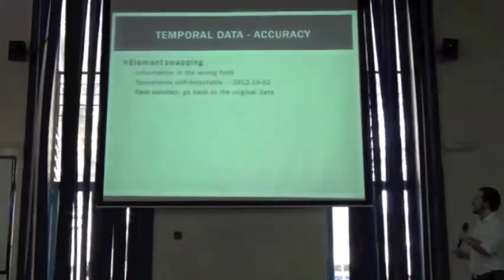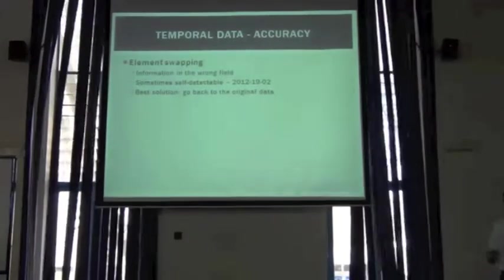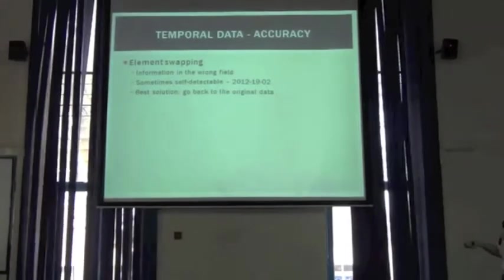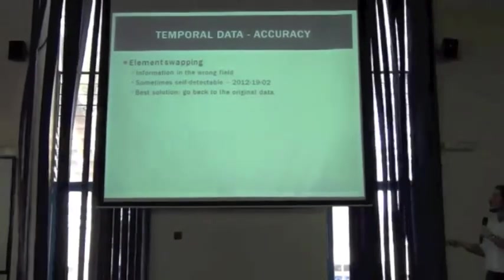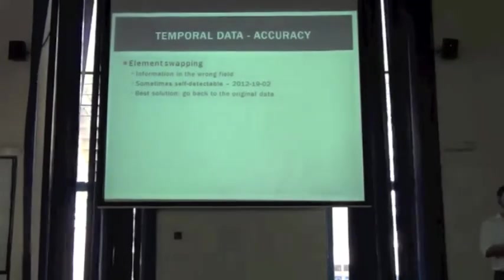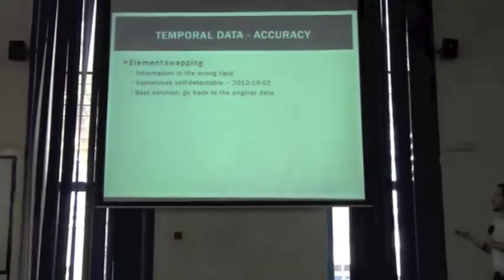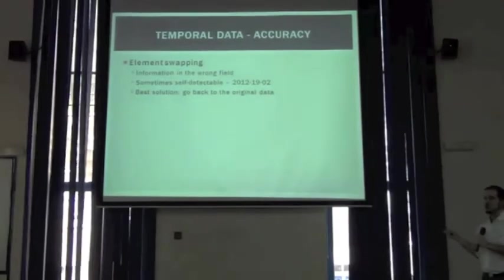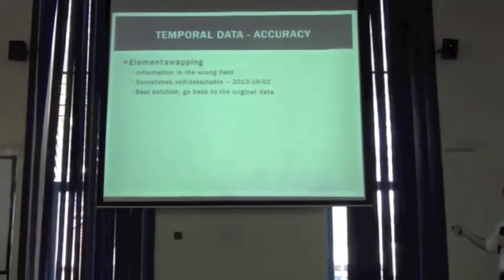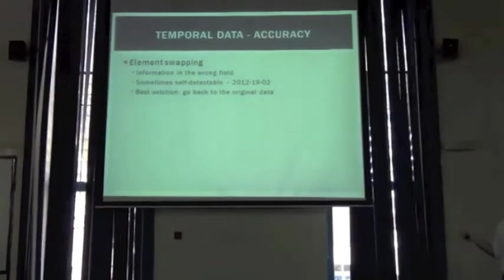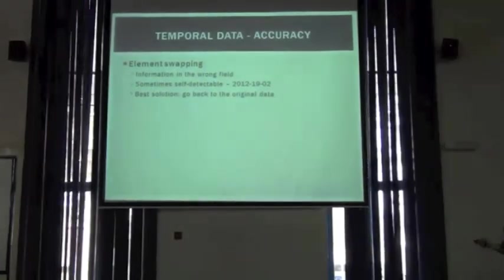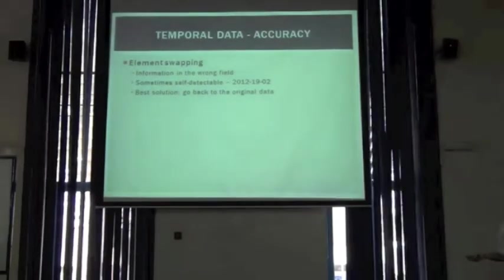The accuracy of temporal data, or in fact the inaccuracies in temporal data, can have several aspects. One of the most common is field swapping, which is putting information in the wrong field, such as putting the day in the month field or the month in the day field. Sometimes these issues are self-detectable. For example, it's obvious that 19 is not a month. It cannot be a month with a number higher than 12.